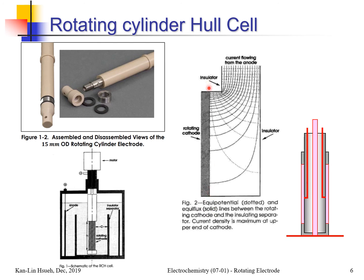If you cut a cross-section view, you can see the current flows from the top downward, resulting in a non-uniform current distribution — exactly what serves the purpose, since you can see how the deposit looks over a wide range of current densities in just one experiment. There is another configuration where the counter electrode is placed in the middle and the rotating cylinder electrode is on the outside. In this case, the current is high near the counter electrode and low farther away, and you simply immerse the entire electrode into a beaker to get the test result.